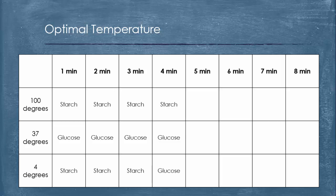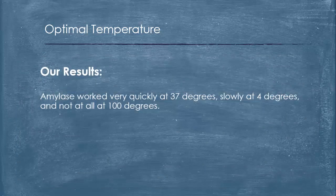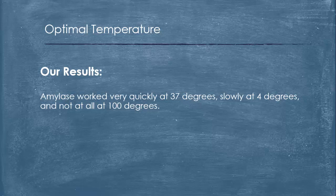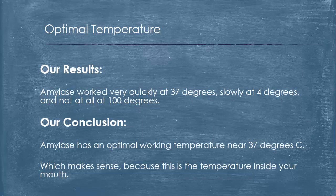Then at about four minutes we should have seen the four degrees, the almost freezing, start to break the starch down into glucose. You'll notice over the eight minute time, at 100 degrees the starch was never broken down into glucose. So the results were: amylase worked quickly at 37 degrees, slowly at 4 degrees, and it didn't work at all at 100 degrees.